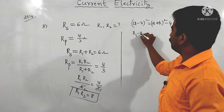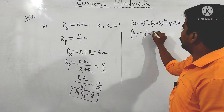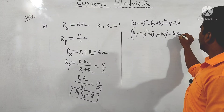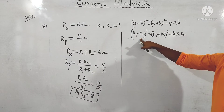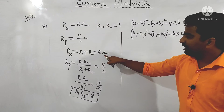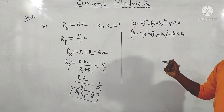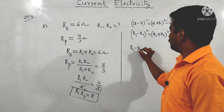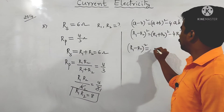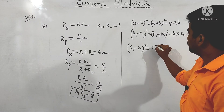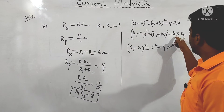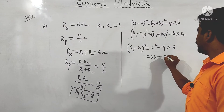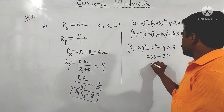Substituting: (R1 − R2)² = 6² − 4 × 8 = 36 − 32 = 4. Therefore R1 − R2 = 2.